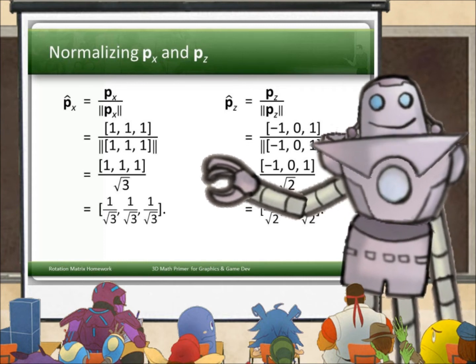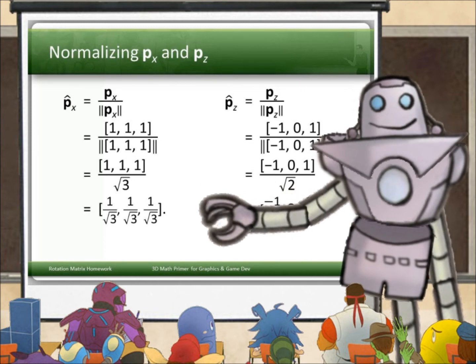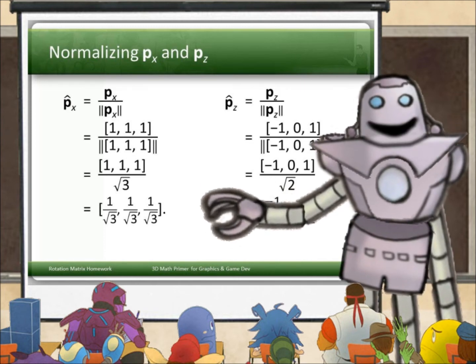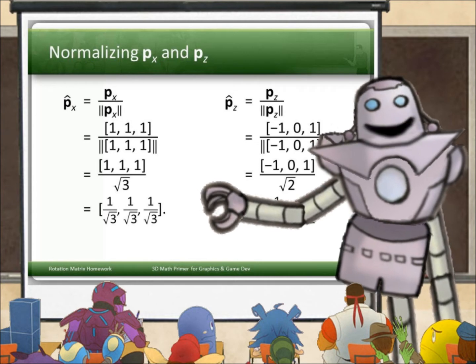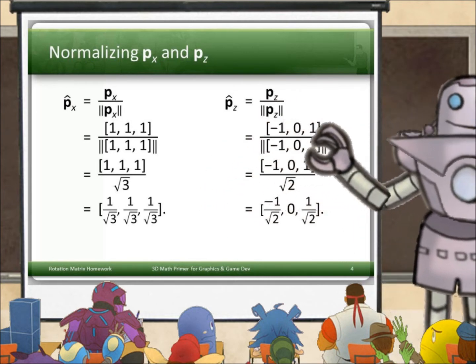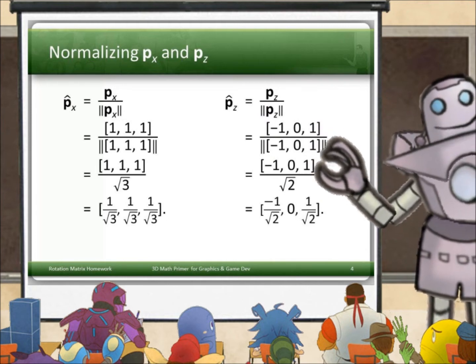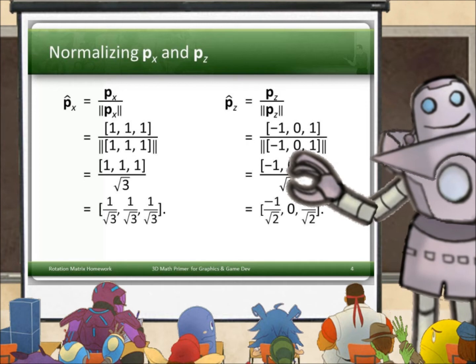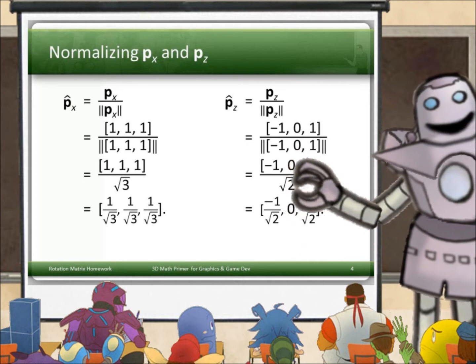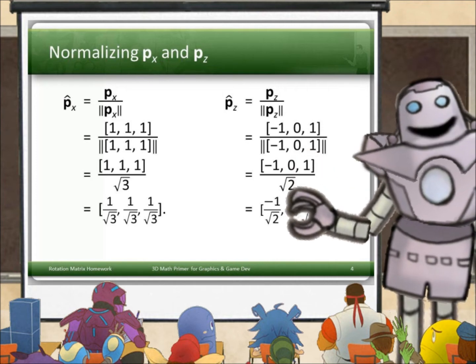So that's (1, 1, 1) over the square root of 3. And, of course, to multiply a vector by a scalar, we simply multiply all of the components by the scalar. And we get (1/√3, 1/√3, 1/√3). To normalize p_z, same process. But the norm here is (-1)² + 0² + 1² which is the square root of 2. So we end up with (-1/√2, 0, 1/√2). Now we're cooking with gas.